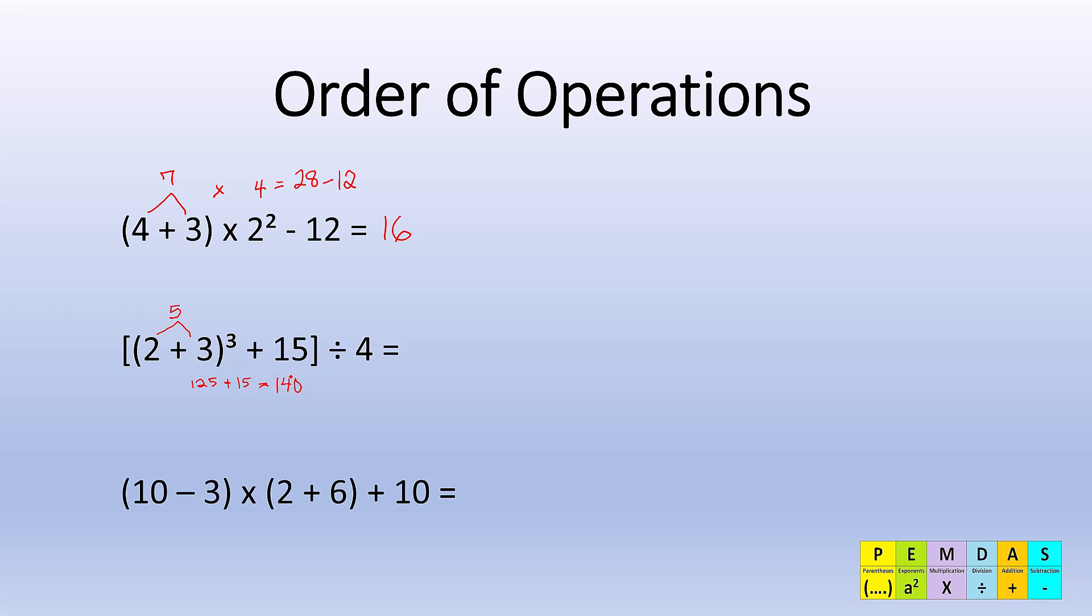Once I'm done solving everything inside the parentheses or bracket, then I can go ahead and finish this by doing the division. 140 divided by 4 would give me 35. Let's quickly do the division on the side so that way we can do a quick review on how to do division. So we have 140 divided by 4.